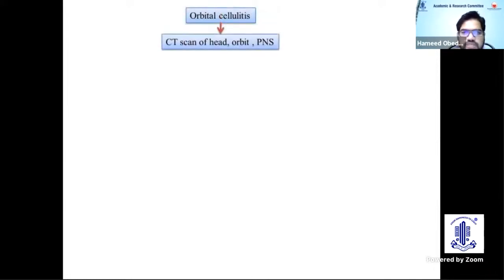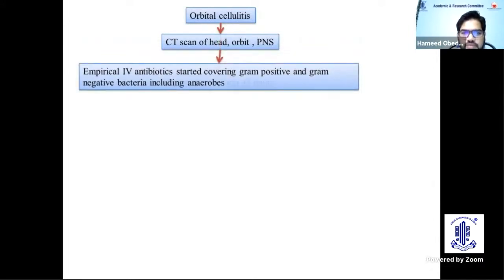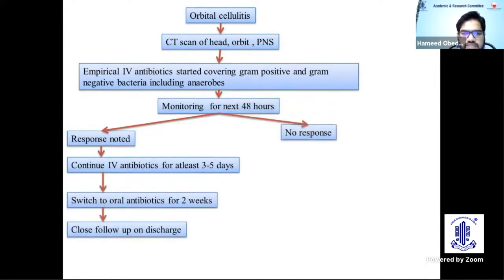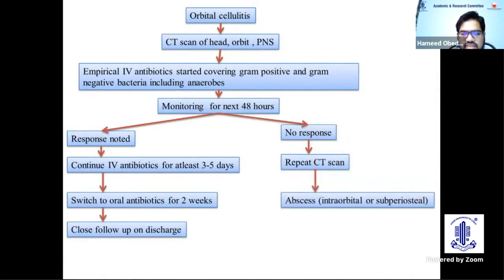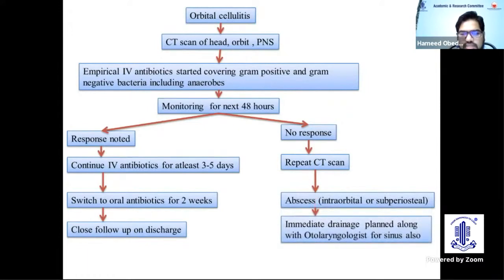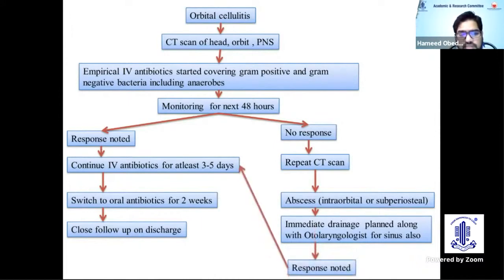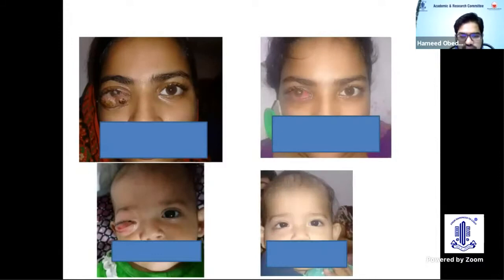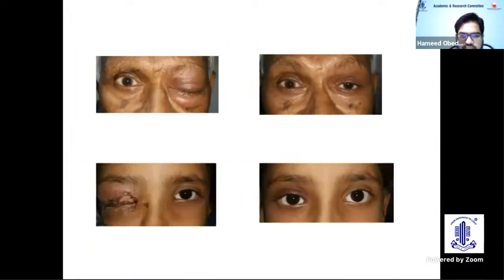In summary, when you see a case of orbital cellulitis: order a contrast-enhanced CT scan of the head, orbit, and paranasal sinuses; start the patient on IV antibiotics covering gram-positive and gram-negative organisms; monitor for the next 48 hours and note the response; continue IV antibiotics for at least 3–5 days, then switch to oral antibiotics for 2 weeks with close follow-up. If there is no response, repeat the CT scan to look for abscess — if found, drain immediately alongside otolaryngologist-assisted sinus drainage. Modify antibiotics based on culture sensitivity. This is a very satisfying result if treated properly; otherwise it can lead to death.